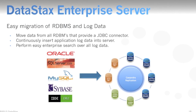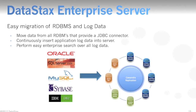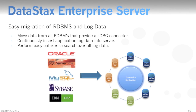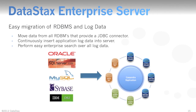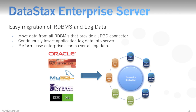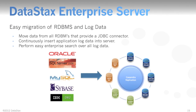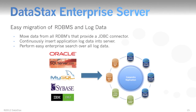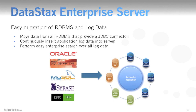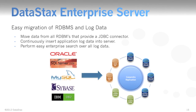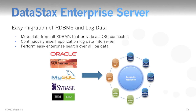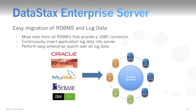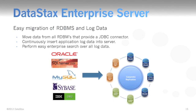Moving data from legacy relational databases to DataStax Enterprise is easy. You simply map relational tables from Oracle, MySQL, SQL Server, or other databases to Cassandra column families, and both the schema and data are transferred for you in DataStax Enterprise.